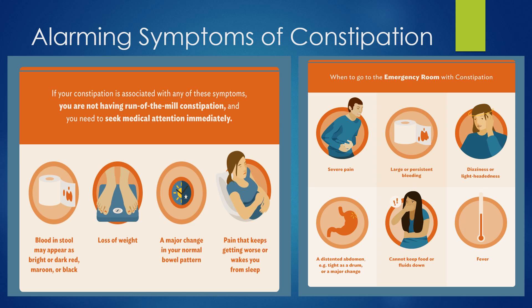If constipation is associated with any alarming symptoms, it is not run-of-the-mill constipation and you need to seek medical attention immediately. These include blood in stool appearing as bright or dark red, maroon, or black; loss of weight; a major change in normal bowel pattern; or pain that keeps getting worse or wakes you from sleep. Go immediately to the emergency room if constipation is associated with severe pain, large or persistent bleeding, dizziness or lightheadedness, a distended abdomen tight as a drum, inability to keep food or fluid down, or fever.